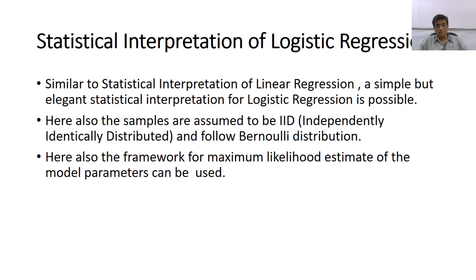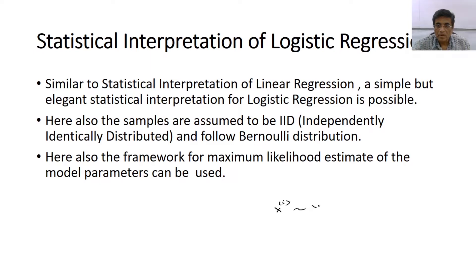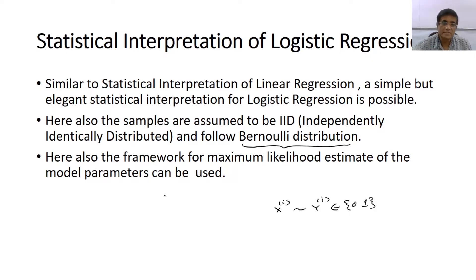Here also we assume that the samples follow IID, that is samples are independently and identically distributed, and they follow Bernoulli distribution. Because for any random x_i, y_i is actually discrete — for any random x_i, y_i belongs to only two values: 0 and 1. When this is the case, the ideal distribution which can capture this kind of population is the Bernoulli distribution. So we are using Bernoulli distribution and the same framework of maximum likelihood estimation of the model parameters.